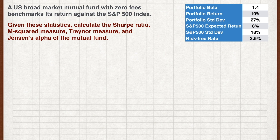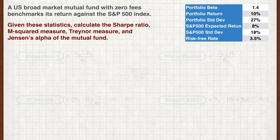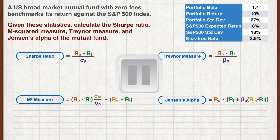Now that we've learned the four measures of portfolio performance, let's apply them. A U.S. broad market mutual fund with zero fees benchmarks its return against the S&P 500 index. Given the provided statistics, calculate the Sharpe Ratio, M-Squared measure, Treynor Measure, and Jensen's Alpha of the mutual fund. Pause the video now and work out your answers.